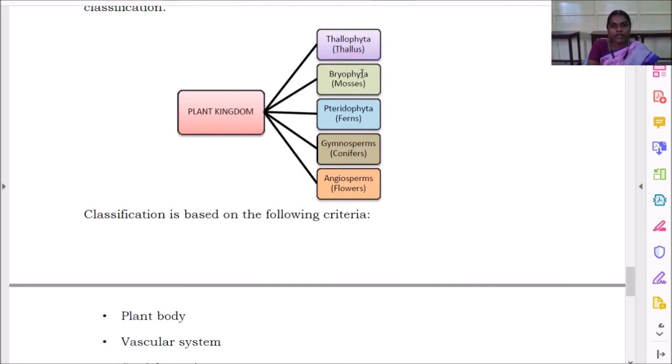Plant kingdom is divided into five things. One is thallophyta, bryophyta, pteridophyta, gymnosperms, and angiosperms. Totally five we have.